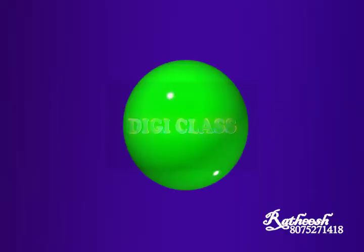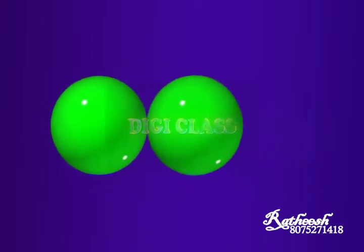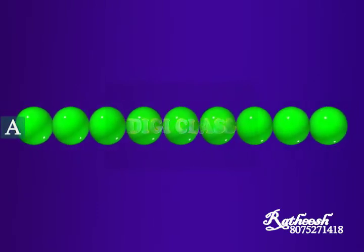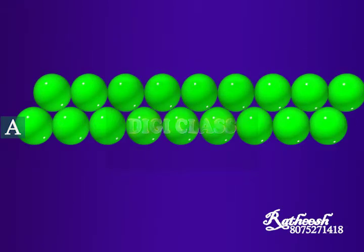There is one more way of arranging the spheres in two dimensions. First, place one row of spheres and name it as A type. Then place a second row of spheres adjacent to the first row such that it fits in the depression of the first row.